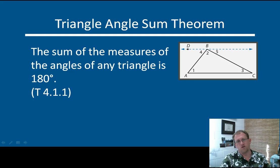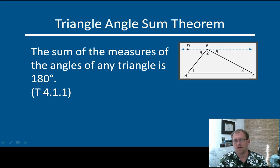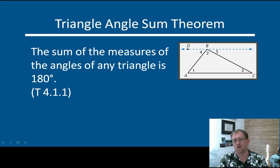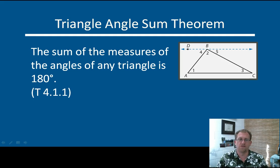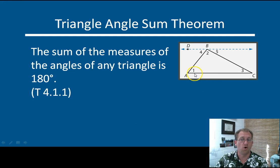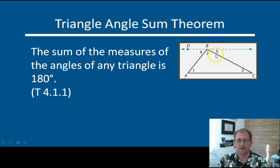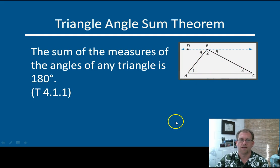Alright, if you are doing math with the angles inside a triangle, it's important to note that all of the angles inside the triangle add up to 180 degrees. The triangle angle sum theorem states that the sum of the measures of the angles of any triangle is 180 degrees. So if I know two angles, I can calculate the third by adding them together and subtracting from 180.